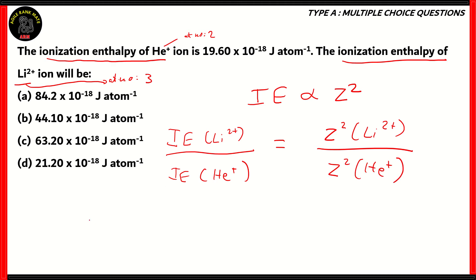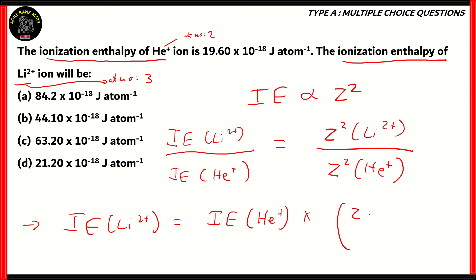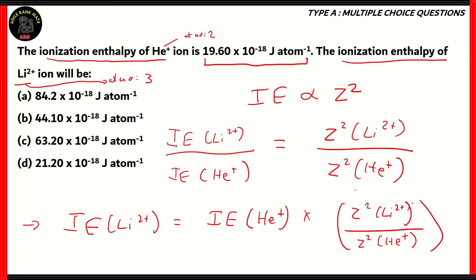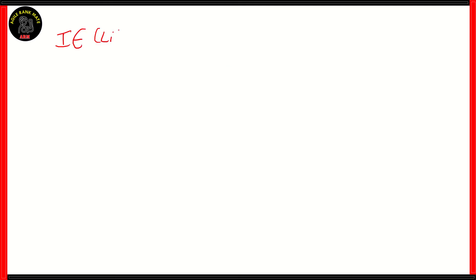That means the ionization enthalpy of lithium 2 plus over the ionization enthalpy of helium plus — the ratio of the two ionization enthalpies — will be equal to the ratio of the squares of the atomic numbers. Therefore, using this relation, you can find the ionization enthalpy of lithium 2 plus as: IE(He⁺) × (Z²(Li²⁺) / Z²(He⁺)), which is 19.6 × 10⁻¹⁸ × (3² / 2²).